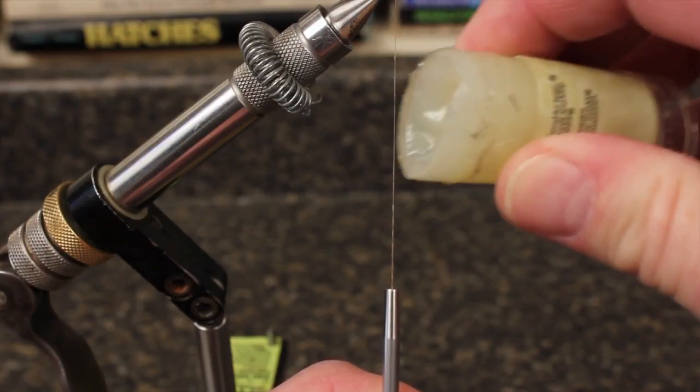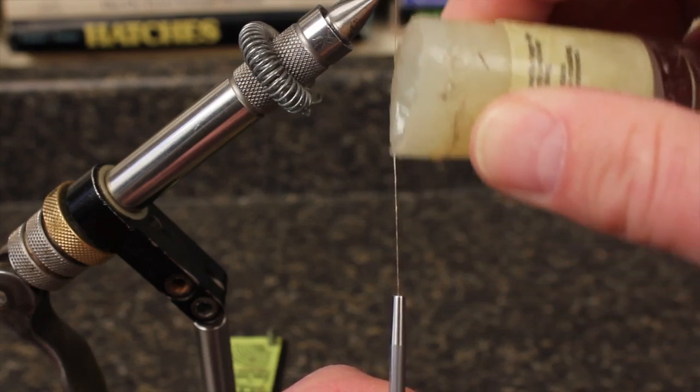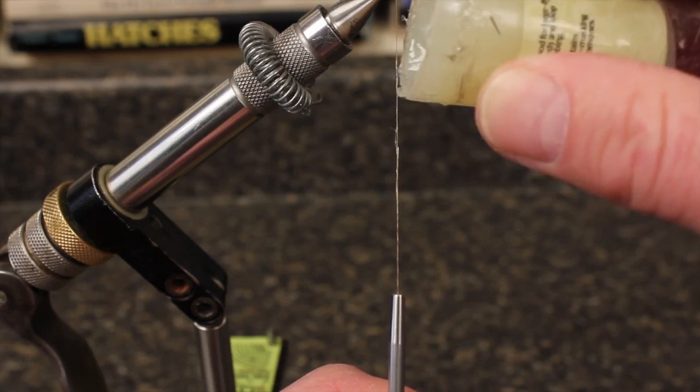Apply a light coating of sticky dubbing wax to about an inch and a half of your tying thread. Loon Products Hi-Tac Swax is a really good choice.